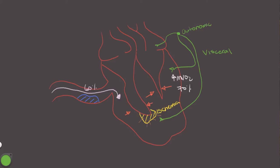This type of chest pain often comes along with nausea, vomiting, and diaphoresis, which is related to the stimulation of these autonomic nerve fibers. As we stimulate the autonomic nervous system, areas of the brain responsible for nausea, vomiting, and diaphoresis are activated by the release of these metabolic wastes from our ischemic area. So we get a visceral chest pain along with autonomic symptoms like nausea, vomiting, and diaphoresis.